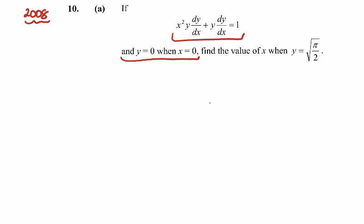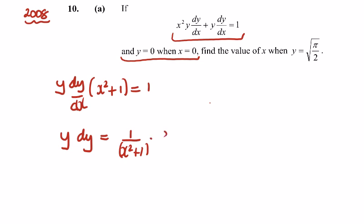We could divide by dy/dx, or we could factor out y dy/dx, which might be the best thing. y dy/dx times that would leave x squared plus 1 equals 1. So multiplying by dx and dividing by x squared plus 1, we're going to get y dy is equal to 1 over x squared plus 1 dx.